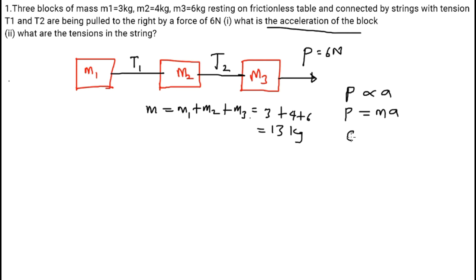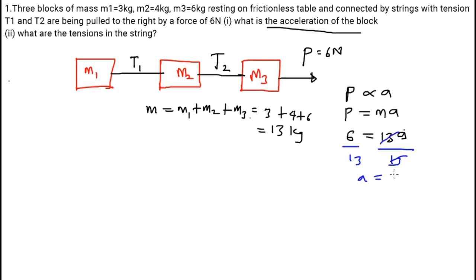The applied force is 6 Newton and the mass of the system is 13 kg. To get the acceleration, I divide both sides by 13, obtaining acceleration equal to 6 over 13, which is 0.46 meter per second squared. That is the acceleration of the object. M1, M2, and M3 will all move at 0.46 m/s² due to the applied force.